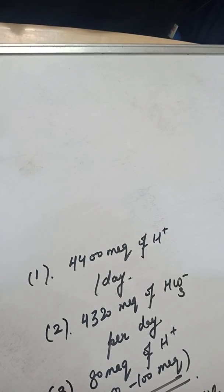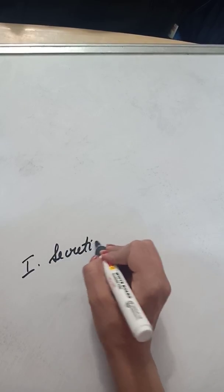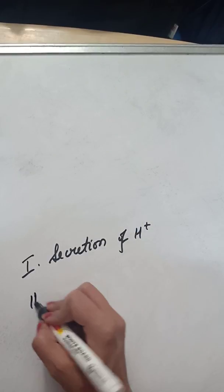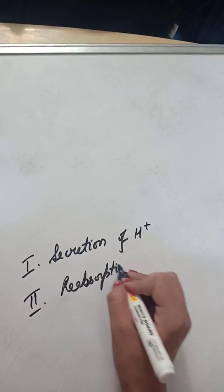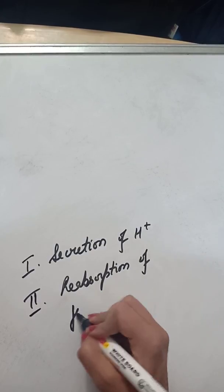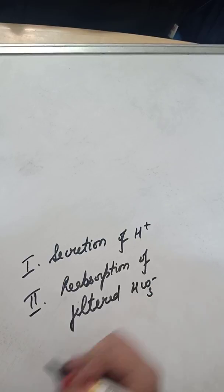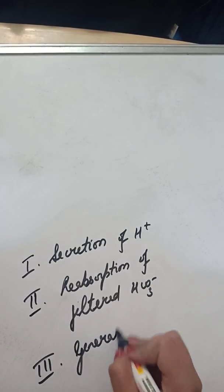The kidney maintains acid-base balance mainly by three mechanisms: number one, by secretion of hydrogen; number two, by reabsorption of filtered bicarbonate; and number three, by generation of new bicarbonate.